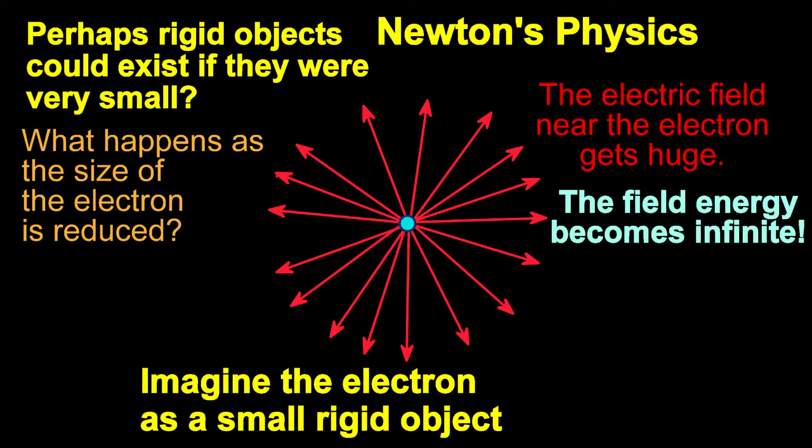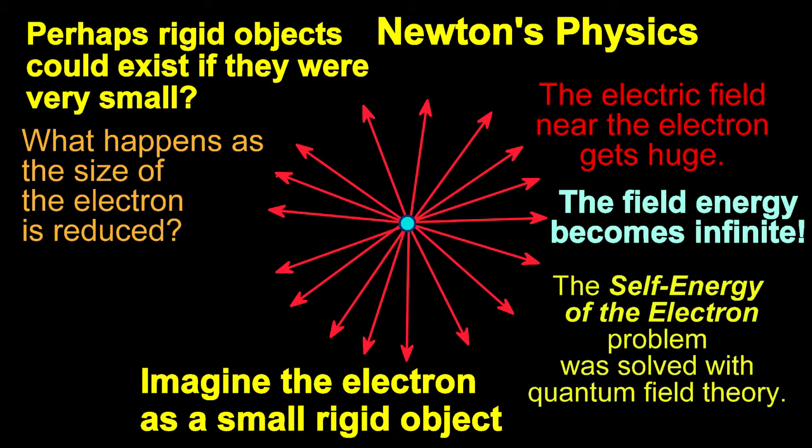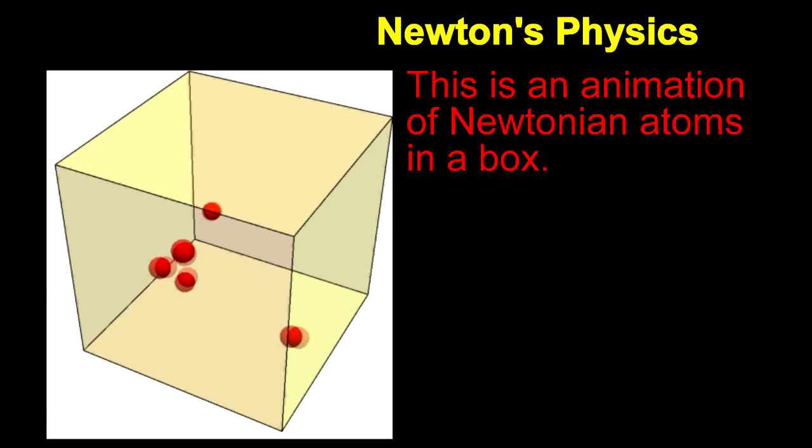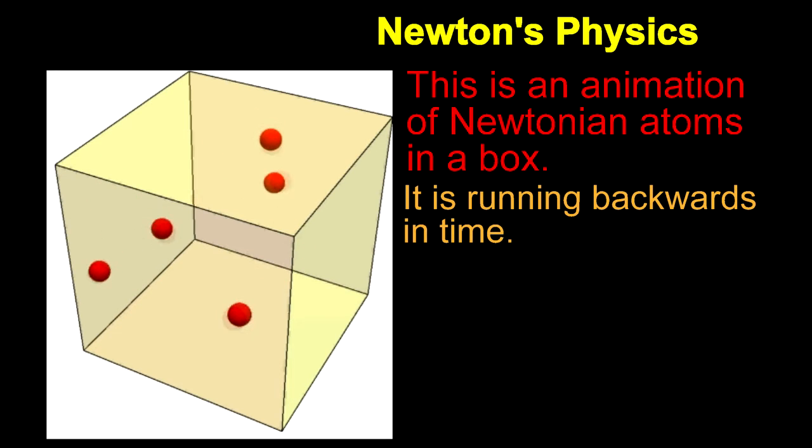What was observed is that electrons have a wave nature. This mess was finally resolved when quantum field theory came along. So the world can't contain rigid objects like Newton imagined.